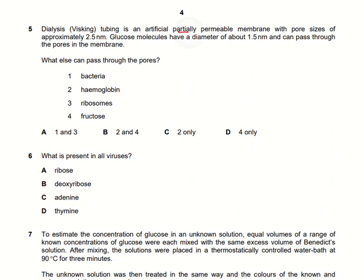Dialysis tubing is an artificial partially permeable membrane with a pore size of approximately 2.5 nanometers. Glucose molecules have a diameter of about 1.5 nanometers and can pass through because they are smaller than the pore diameter. When comparing bacteria, hemoglobin, ribosomes, and fructose, fructose is the molecule with a size small enough to pass through the 2.5 nm membrane. So option D is the right answer.